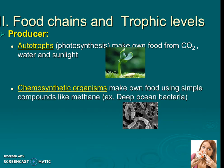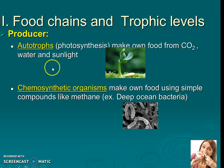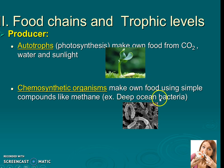There are some organisms that don't do photosynthesis that are also producers. Instead of calling them photosynthesizers, they are chemosynthetic organisms because instead of sunlight, they use chemical compounds such as methane to make their own food. A lot of the most well-known ones are from the deep ocean, and they're usually bacteria.